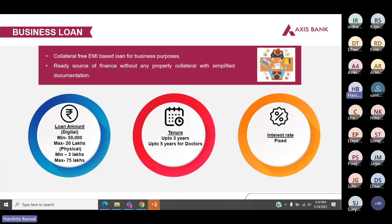Business loan is an EMI-based collateral-free loan. We do not ask for any property collateral and we have very simplified documentation. When the loan is processed digitally, the minimum loan amount offered is 50,000 and maximum is 20 lakhs. When it is done physically, minimum is 3 lakhs and maximum is 75 lakhs. Tenor is up to three years.